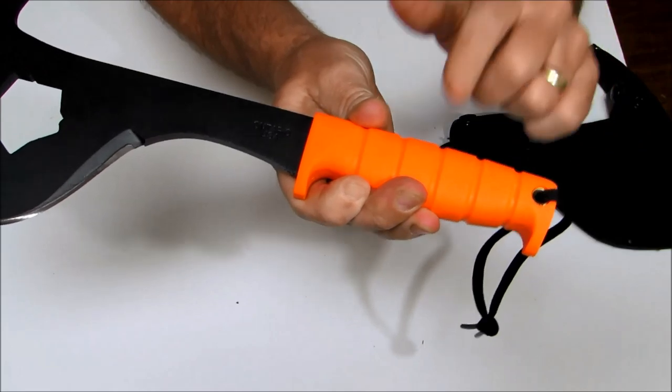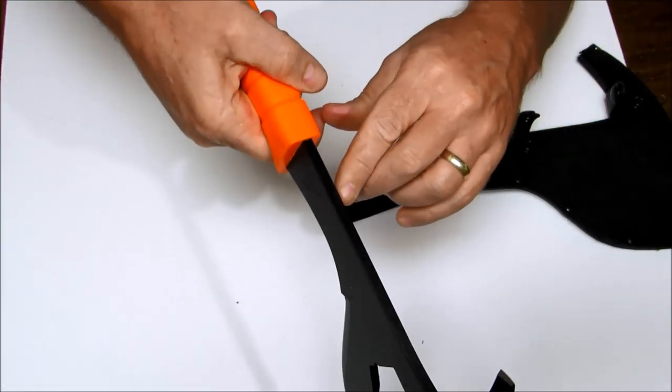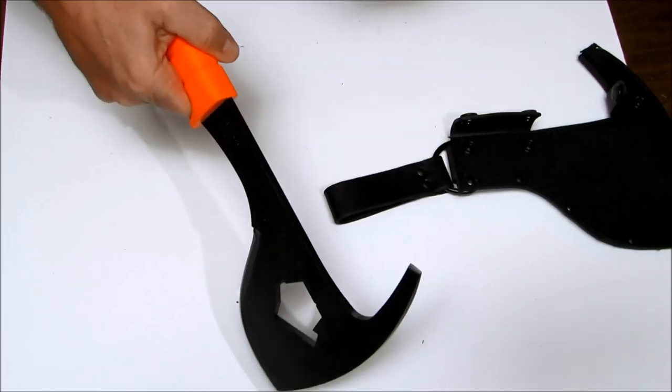You've got a lanyard hole in the Kraton handle. It gives a good grip. It's a thick stout quarter-inch blade material on there.